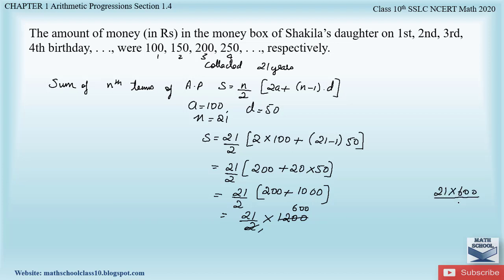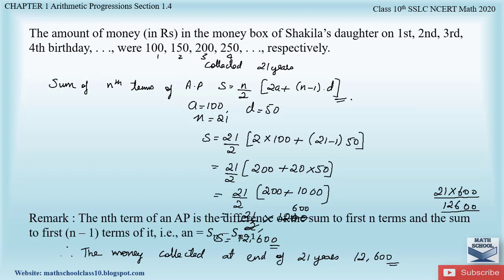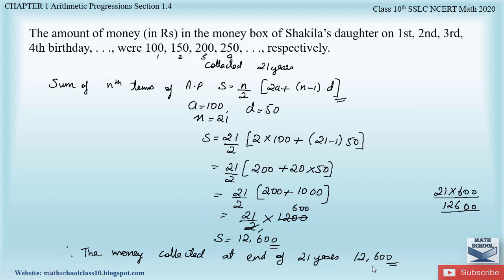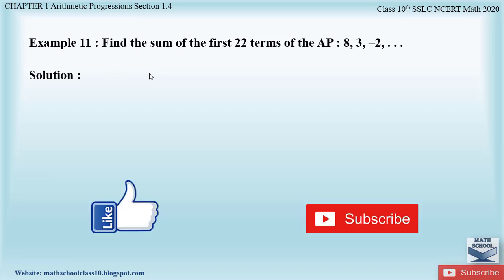So S = 21 × 600 = ₹12,600. The total money collected at the end of 21 years is ₹12,600. See how easily we found the result using just one formula! In my next video I will solve the example problems from Section 1.4, Chapter 1: Arithmetic Progressions. Till then, please like my video and subscribe to my channel — thank you!